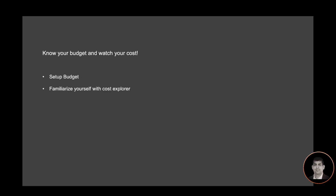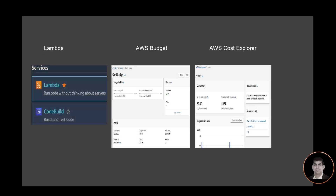Before you start with the workshop, I recommend that you know your budget, watch your budget, and watch your costs. Set up your budget and then familiarize yourself with Cost Explorer. As you will see, I have my AWS budget configured, and by using the AWS Cost Explorer I can also monitor my costs.